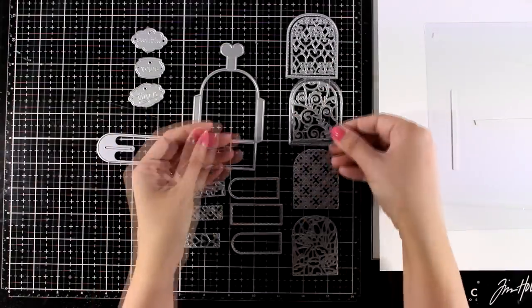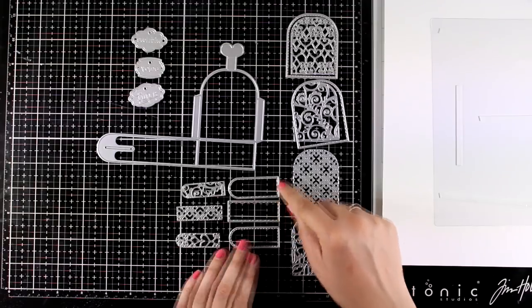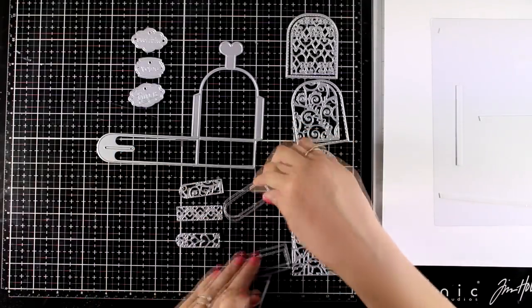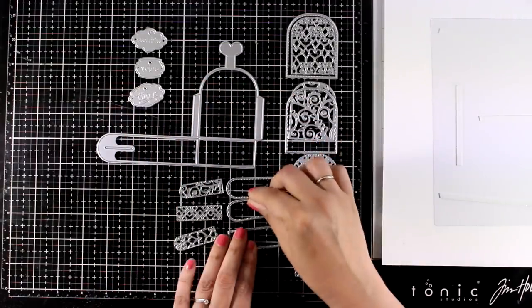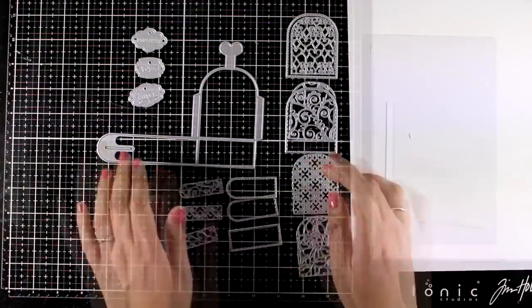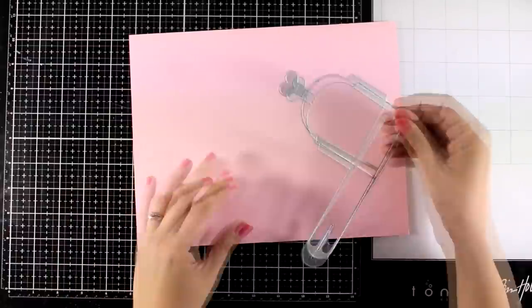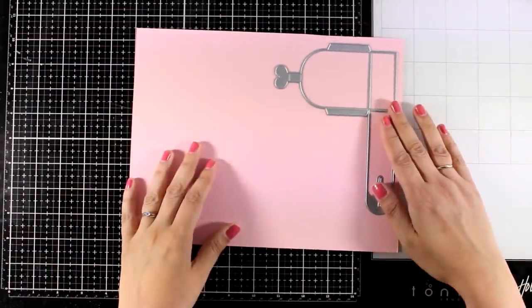They look exactly the same but they aren't. One of them has a dot design, the other one has a stitch design and it is the same with those two dies that they look identical but they are actually aren't. Now by combining all these dies you get so many different options and the possibilities are really endless.